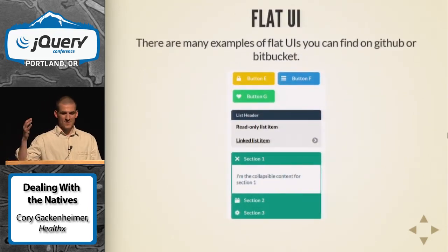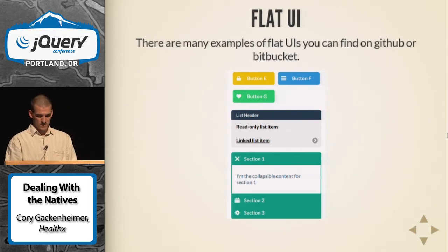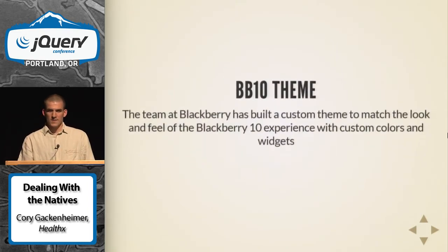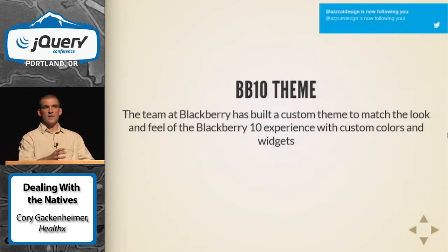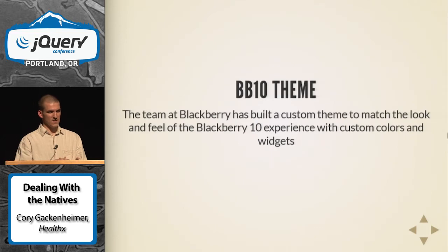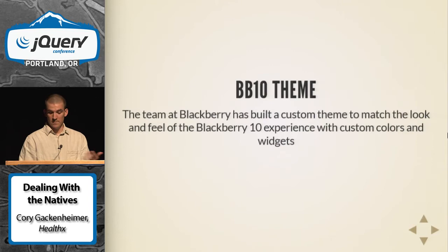There are also flat UI themes on GitHub — it's the direction jQuery Mobile is going, and there are already some out there with a different look and feel. BlackBerry 10 even has their own theme so your app matches the native experience. They extended the widget factory with custom widgets, like a custom dropdown to match the native BlackBerry UI.